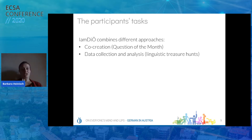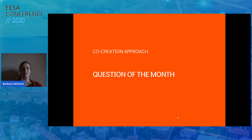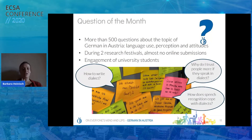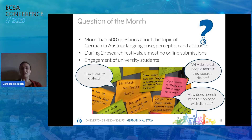Second, we also have linguistic treasure hunts where people collect and analyze data on linguistic landscapes. In the co-creation approach — the Question of the Month — we ask citizens to raise questions about the use and perception of German language in Austria. The initial attempt to recruit participants via social media and our website, allowing them to enter questions in a web form — such as 'how to write dialects,' 'why do I trust people more if they speak in dialect,' or 'how does speech recognition cope with dialects' — unfortunately didn't yield the expected success.